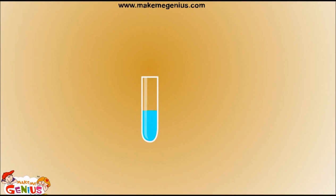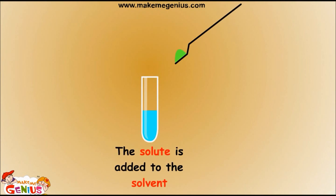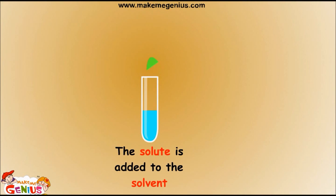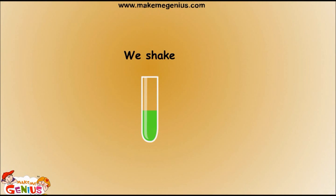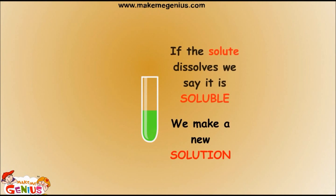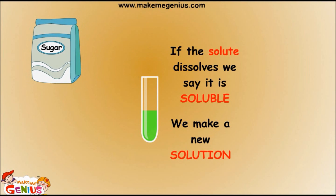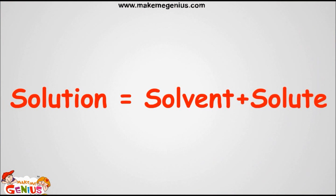We take water — it is a solvent. The medium in which another thing is mixed is called a solvent. Look at this green powder — it is the solute. The solute is added to the solvent, then we mix it, and you have made a solution. In our sugar solution, sugar is the solute and water is the solvent. A solution is a mixture of solvent and solute.